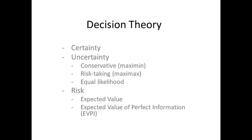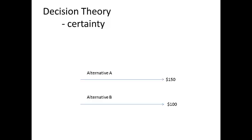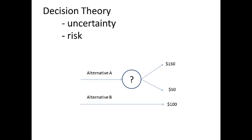Decision theory includes mathematical techniques that can help you decide among alternatives whose results will be seen in the future. If the sequence of events from now to the future is certain, the decision is straightforward — you choose the alternative whose future outcome you prefer. But if there is an intervening event that is uncertain or risky, you cannot be sure which alternative is preferred.